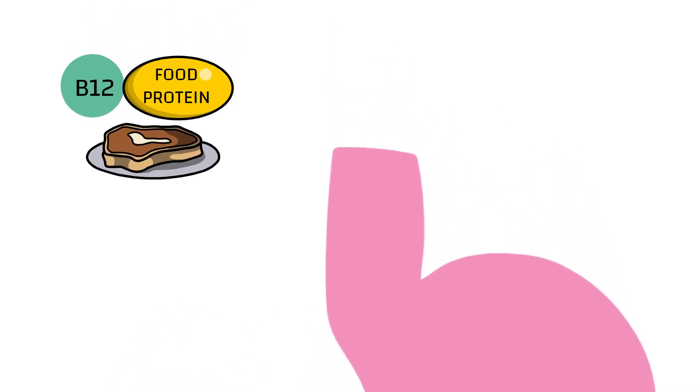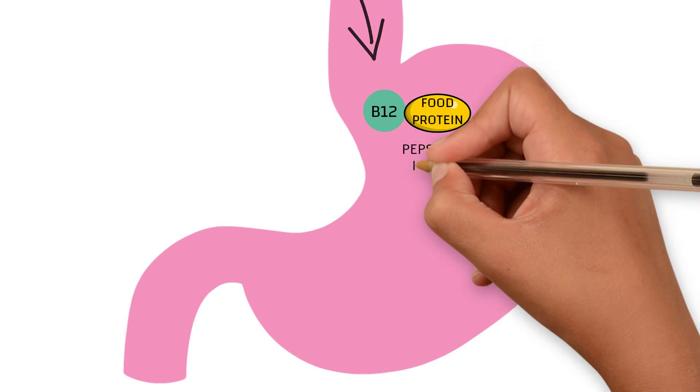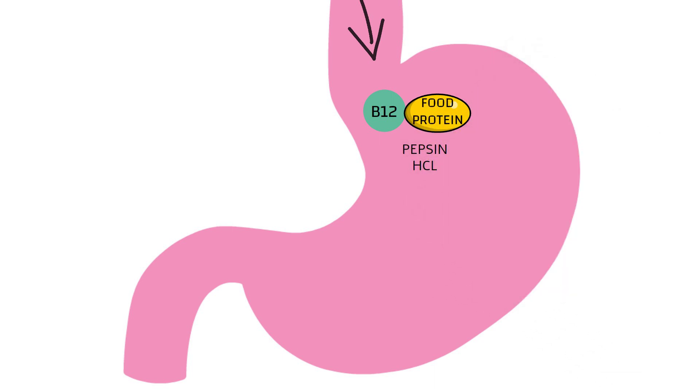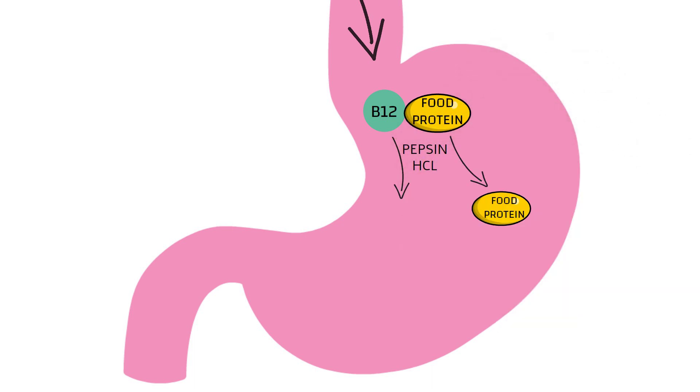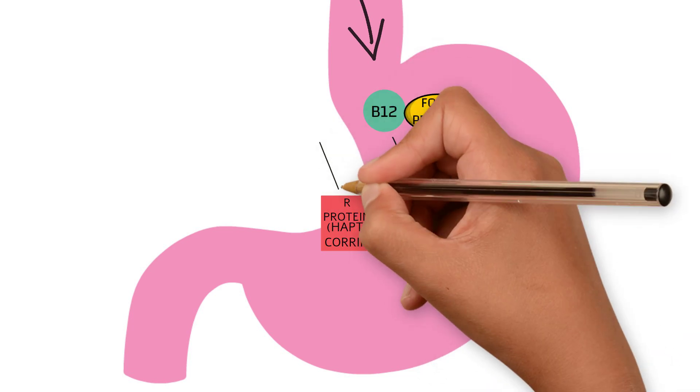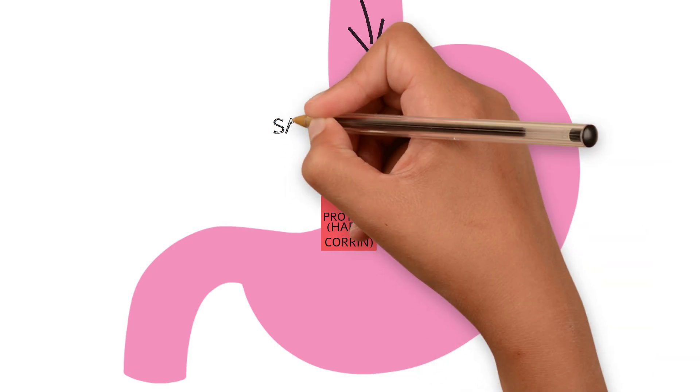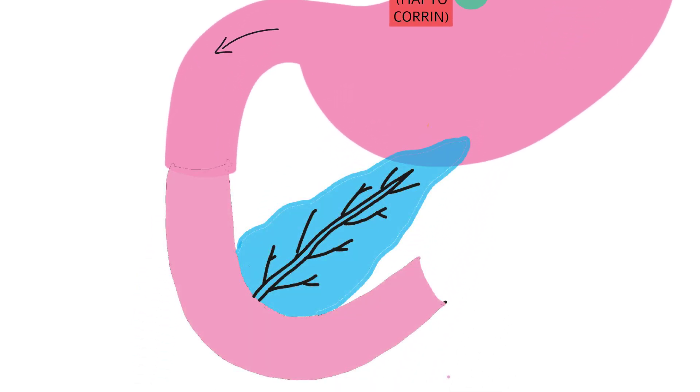Once inside the stomach, B12 is released from food protein by action of pepsin and hydrochloric acid. The released B12 then binds to R protein, belonging to a group of proteins called haptocorrins. These are B12 binding proteins derived from saliva, a salivary glycoprotein, and this B12-R protein complex reaches the duodenum.